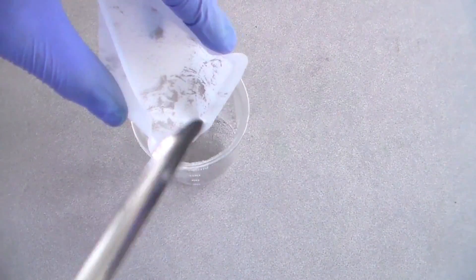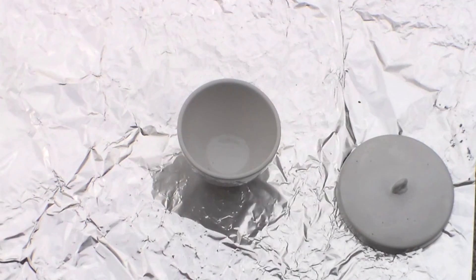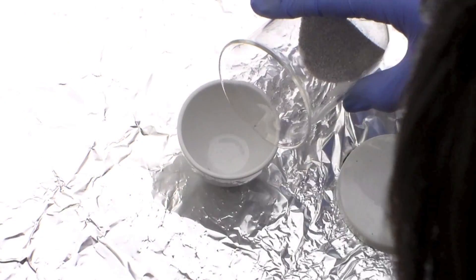Once I had measured everything out, the chemicals were added to a beaker and mixed using a glass stir rod. Once the powders were mixed, I transferred them to a crucible.